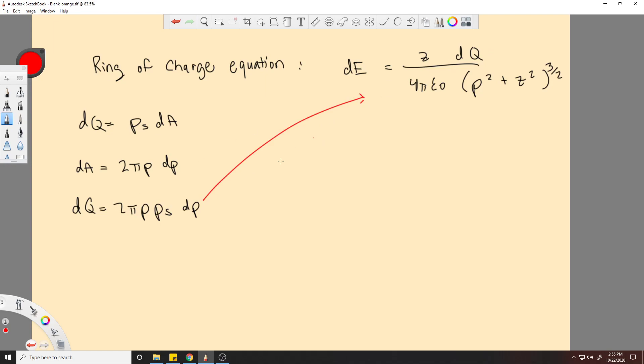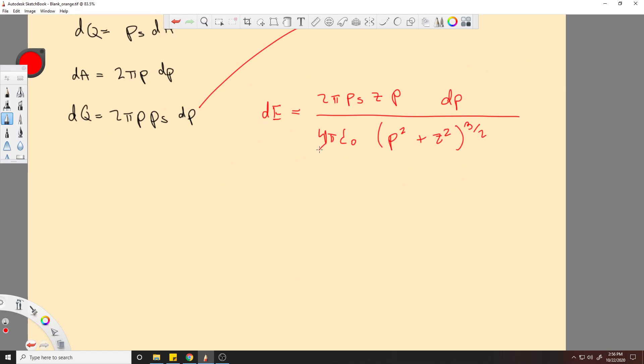Okay, now we're going to plug this into here. Okay, this dQ is going to go into here. So now I'll give us dE is equal to 2 pi rho s. I'll put the z first, this z right here, and rho. So that's all these components except for the d rho. I'll put the d rho over here. And this would be 4 pi epsilon naught rho squared plus z squared.